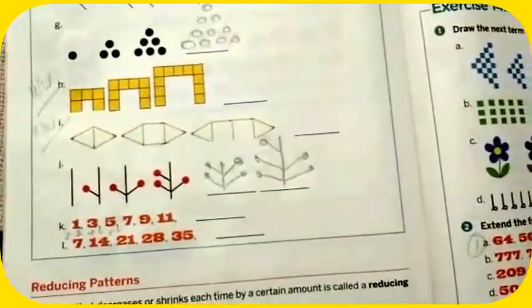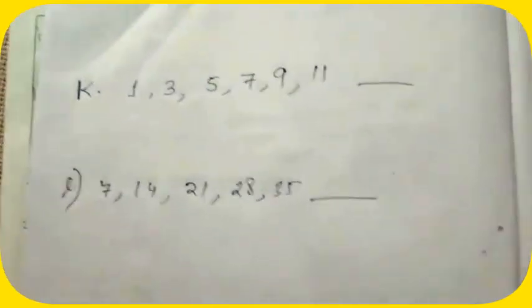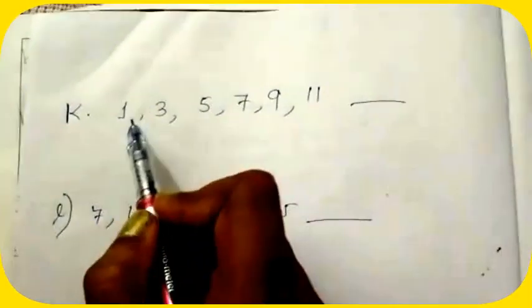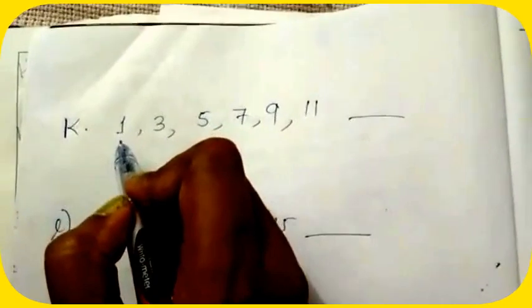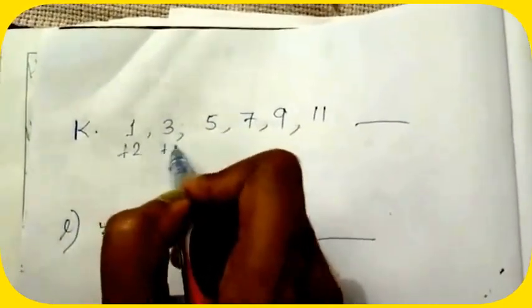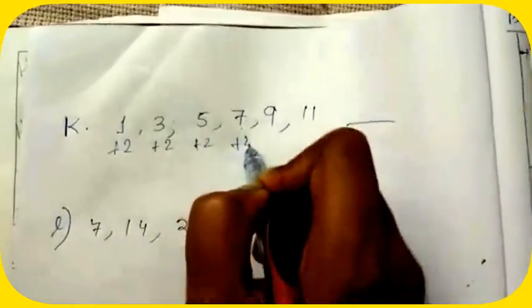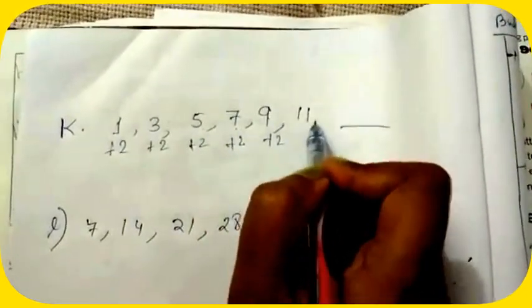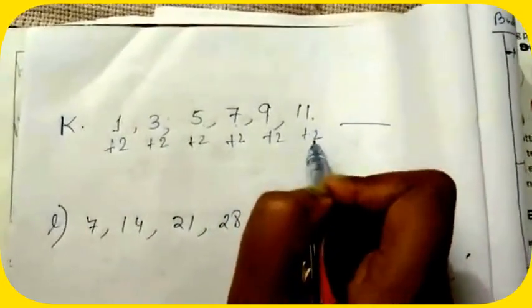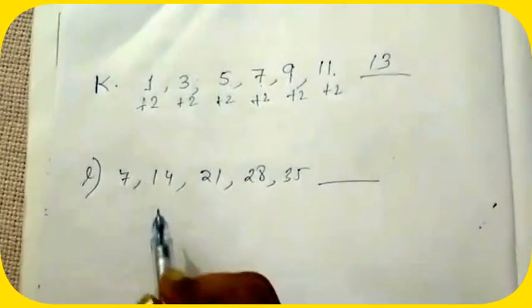Number K: you see 1, 3, 5, 7, 9. That means if I add 2 with 1, I will get 3. Then plus 2 will give you 5, then plus 2 will give 7, then plus 2 will give you 9, then plus 2 will give you 11, then 11 plus 2 will give you 13.